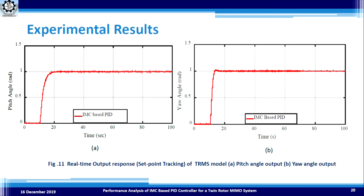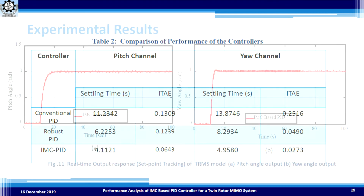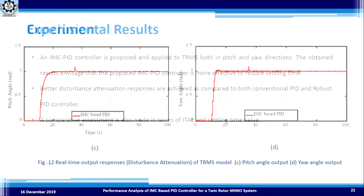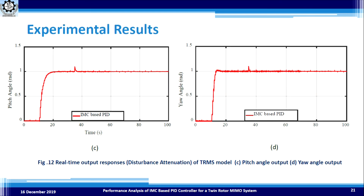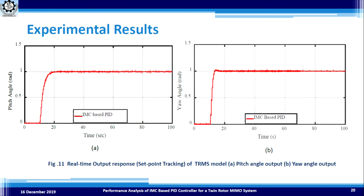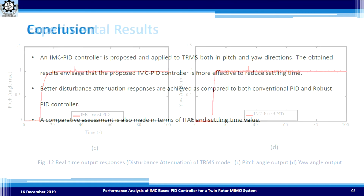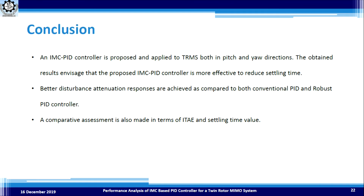In the experimental results, the IMC-based PID is demonstrated for set-point tracking, and robustness is checked by adding a 0.1 radian disturbance signal at 35 seconds on the real-time TRMS system. The conclusions are that the IMC-based PID controller is proposed and applied to both pitch and EO channels. The results confirm that the proposed IMC-based PID controller is more effective for set-point tracking as well as disturbance attenuation. A comparative assessment is also made in terms of integral time absolute error and settling time.